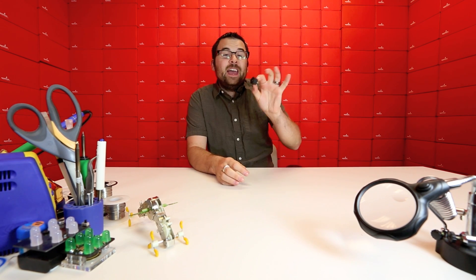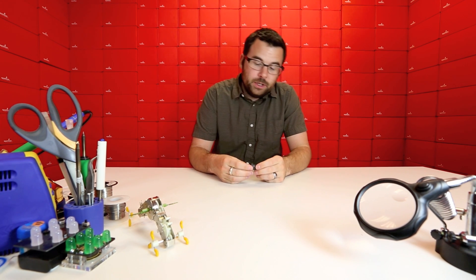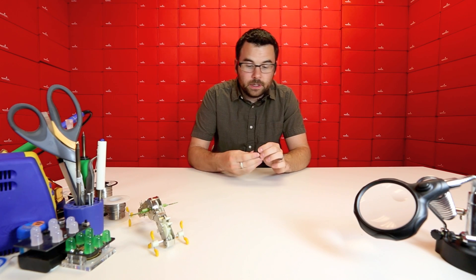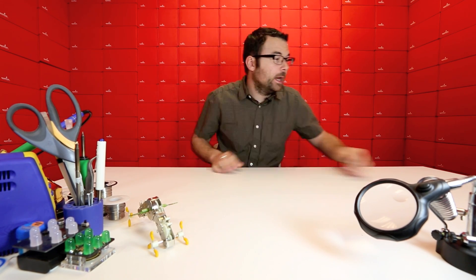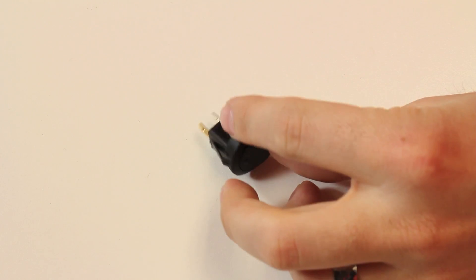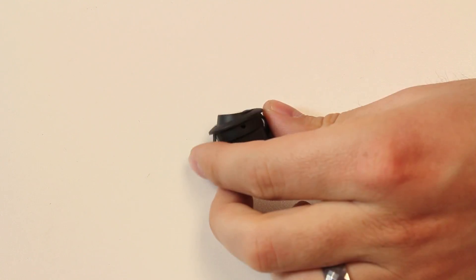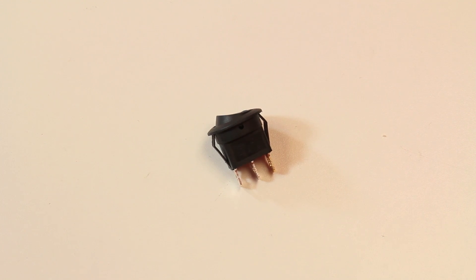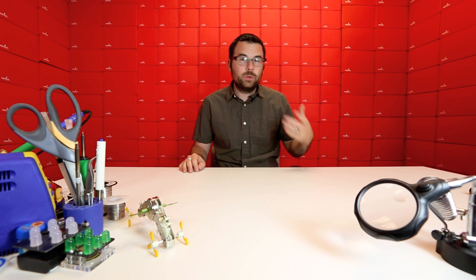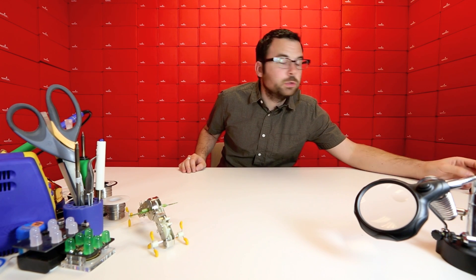Here we have yet another rocker switch. This guy is round. It has these little snap-in tabs, as you can see. And round is nice because it's really easy to drill a round hole. It is significantly more difficult to drill a rectangular or square hole. So you can just drill a nice round hole, snap this, and then you're good.